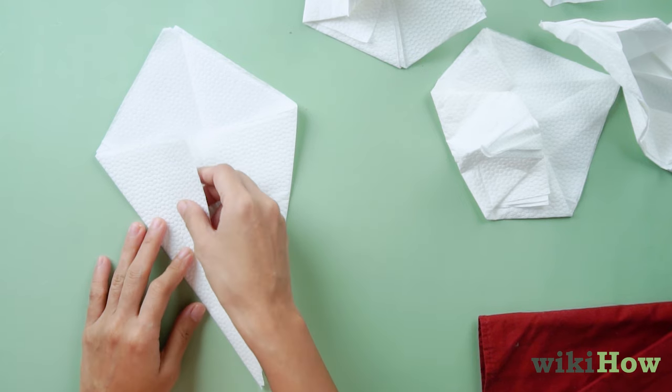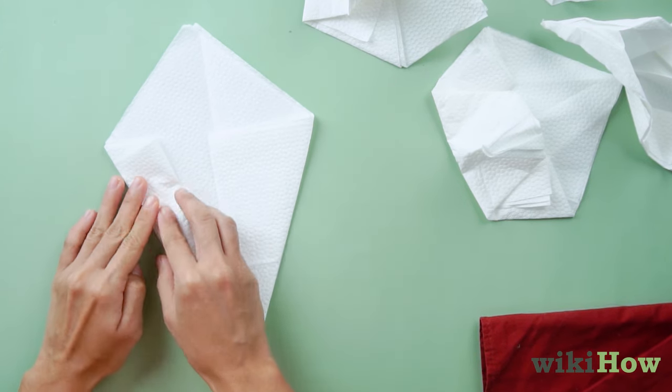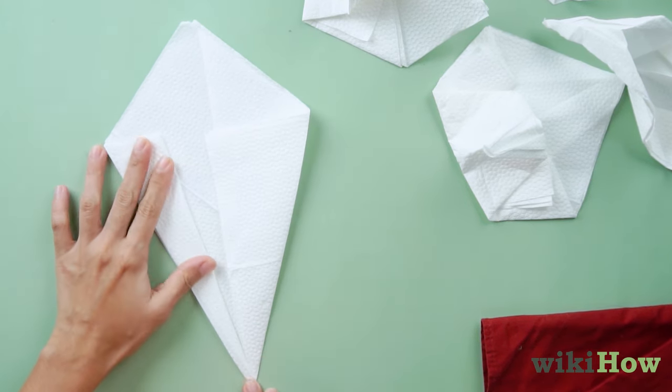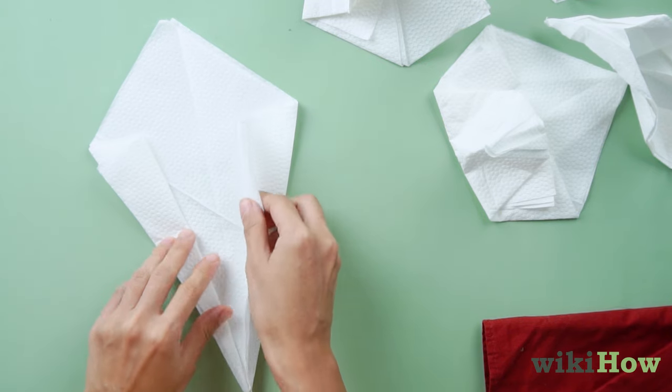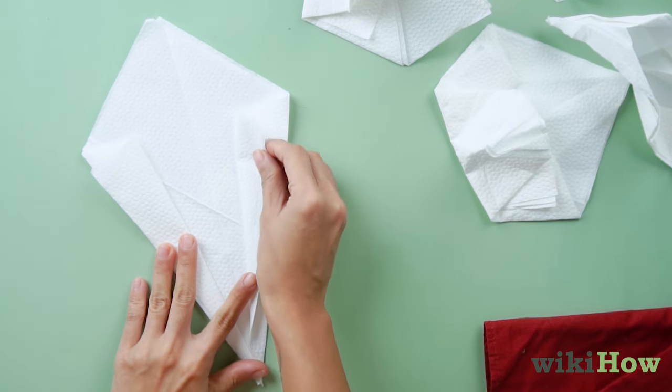Grab the edge of the top flap and fold it back on itself, making a new crease parallel to the center line. Pull the bottom flap out and do the same thing.